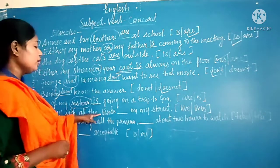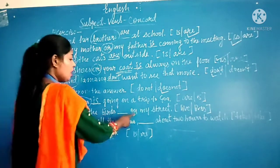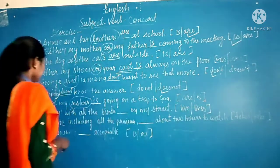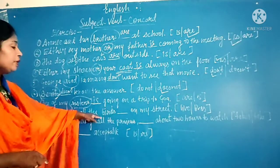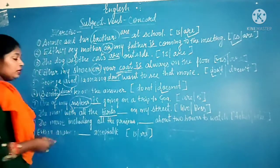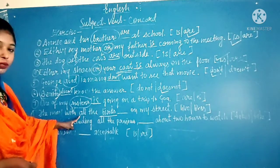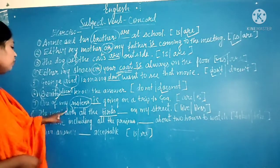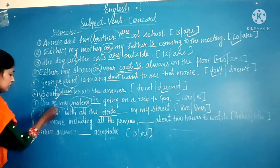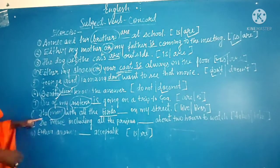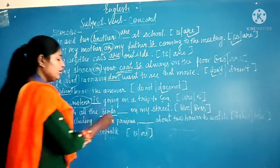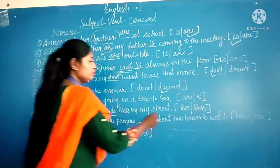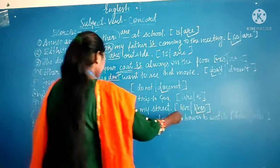The next sentence: 'The man with all the words ___ all my strength.' The options are 'leave' and 'leaves.' Although 'words' is plural, we go according to the subject, which is 'the man' — singular. So the singular verb form is the correct answer here.